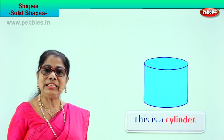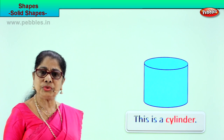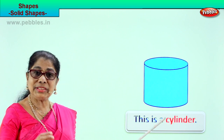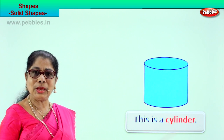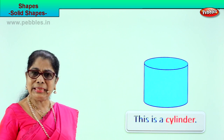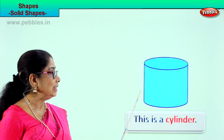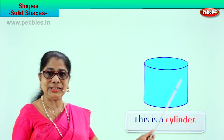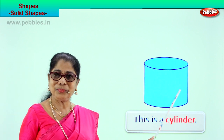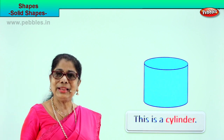You have tins in your house — you might have seen tins where mummy keeps biscuits. It's a cylinder shape.